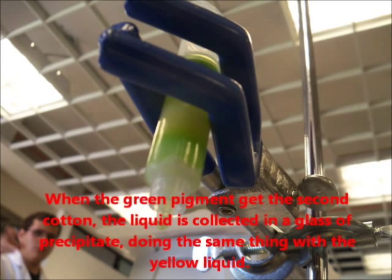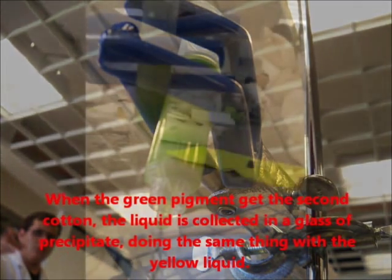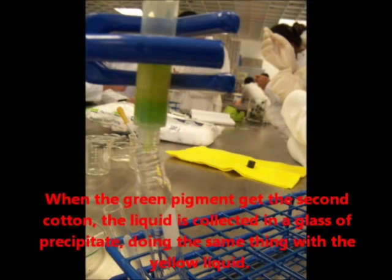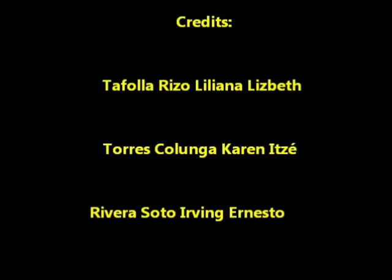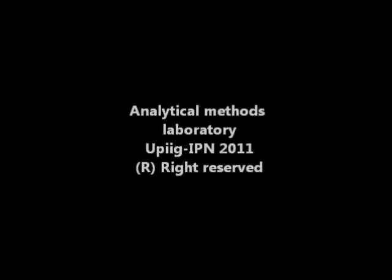When the green pigment reaches the second cotton, the liquid is collected in a glass beaker. Do the same thing with the yellow liquid.